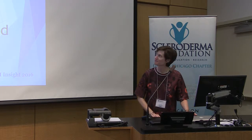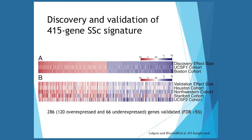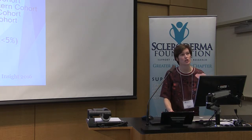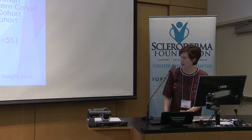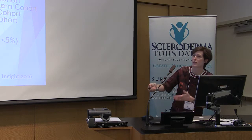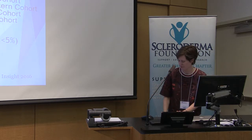Every good discovery has to be validated before we take it to patients. We took two publicly available data sets — 158 patients in samples — and identified a 415-gene signature associated with skin disease. We then validated that using five independent data sets. That's your government dollars at work. Out of the 415 genes, 120 were overexpressed and 66 were underexpressed in the validated set, so 286 were statistically legitimate.